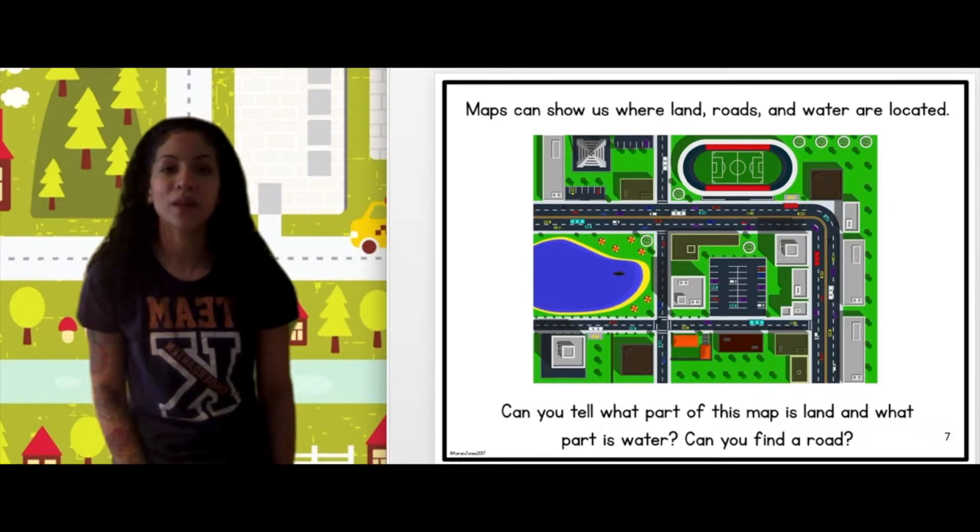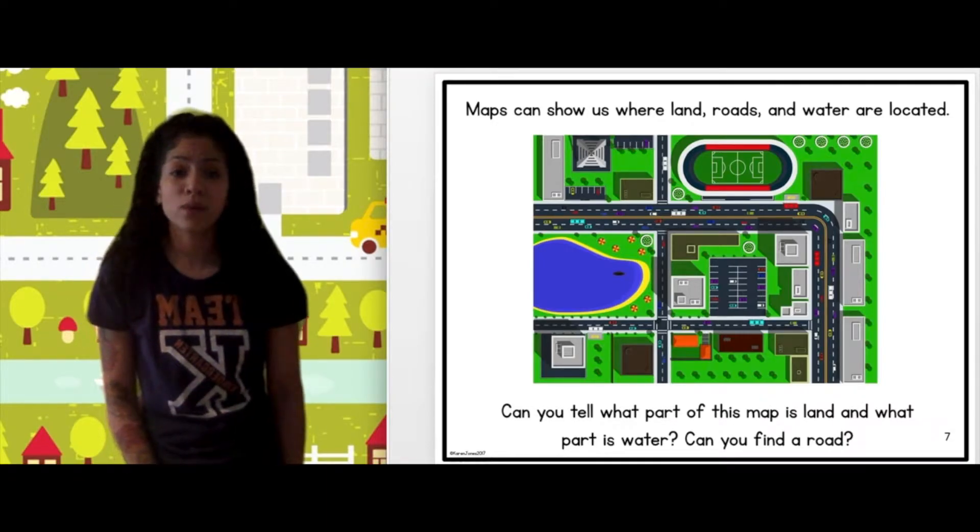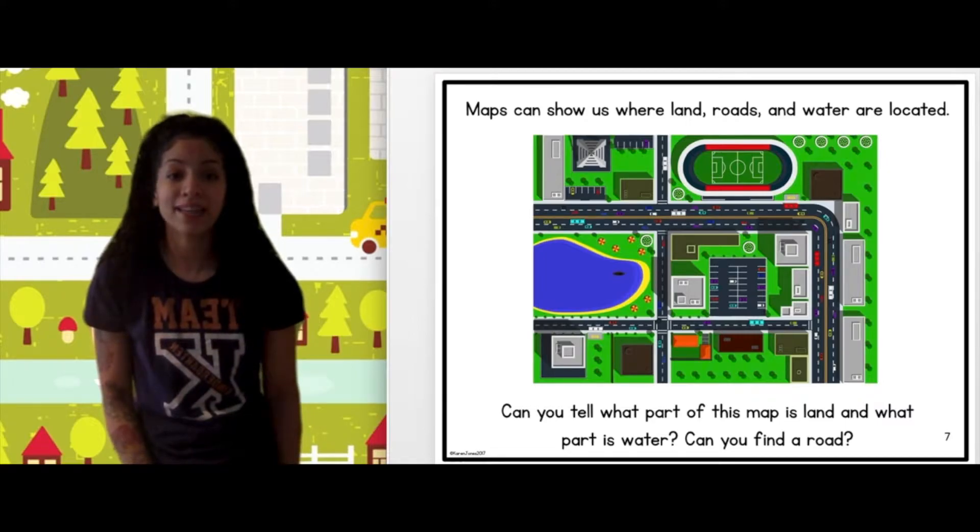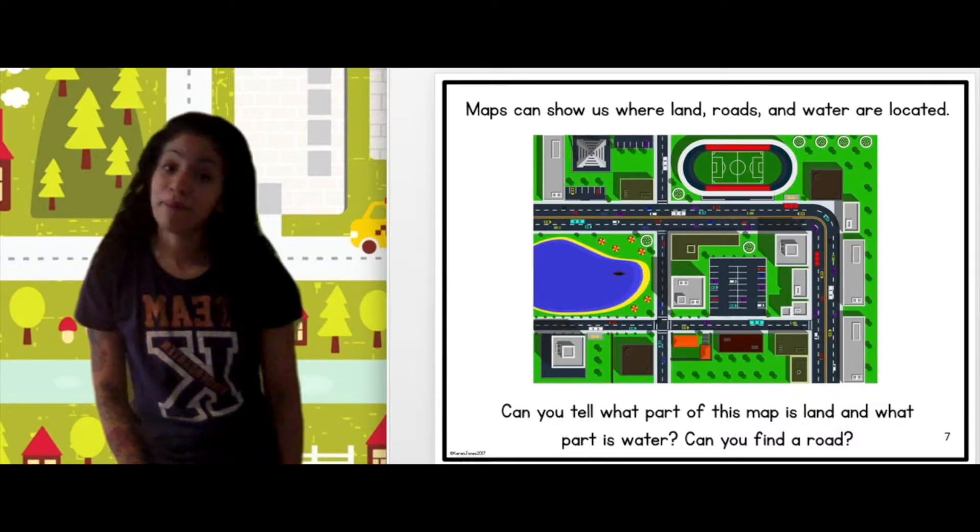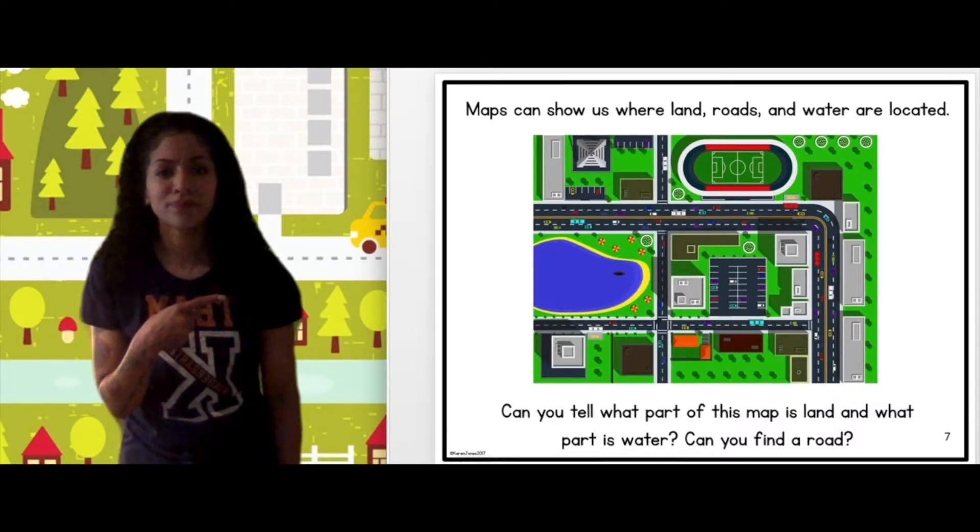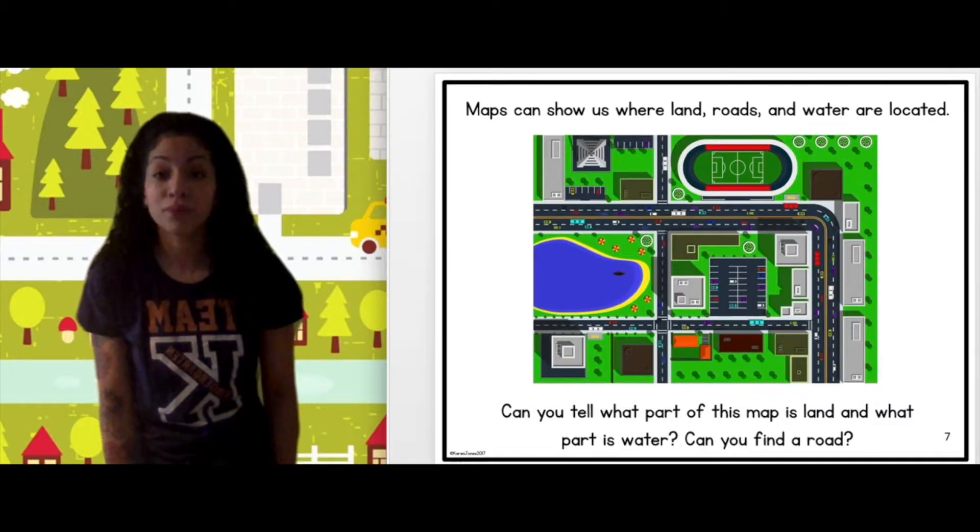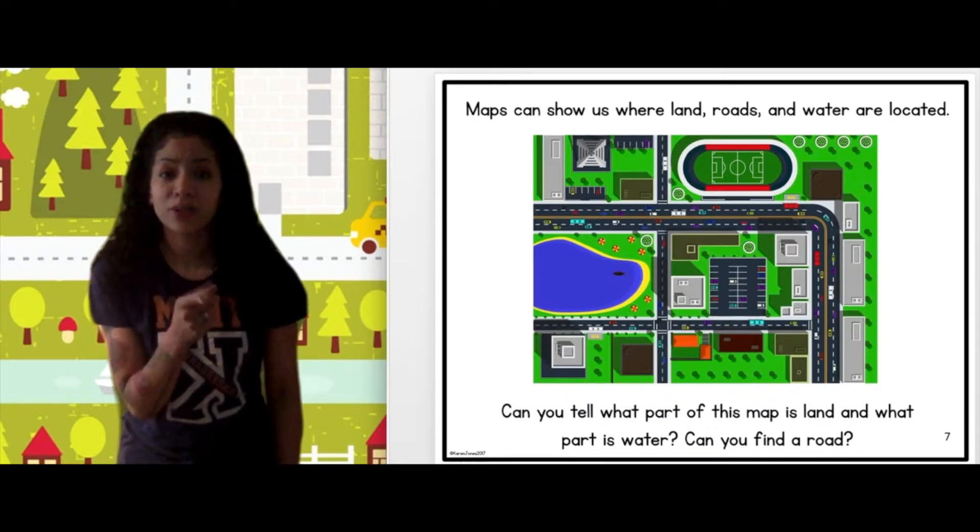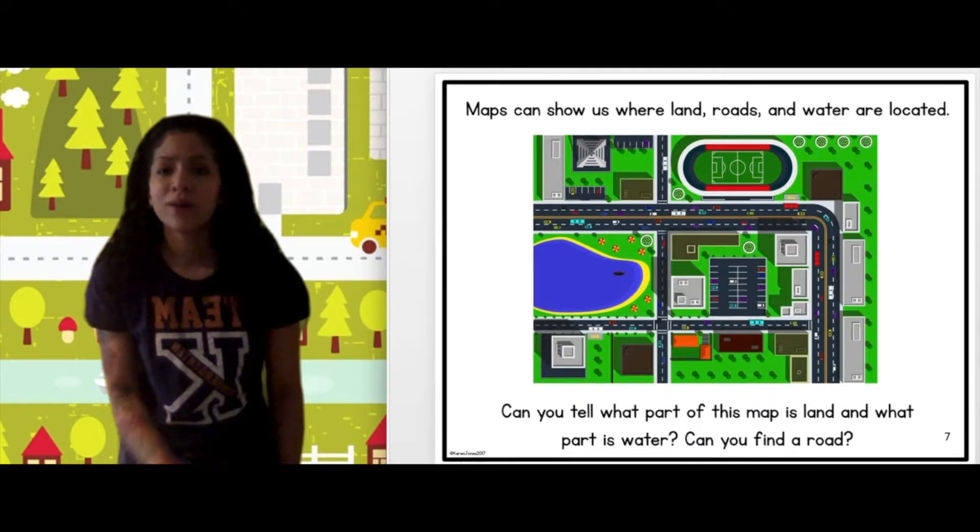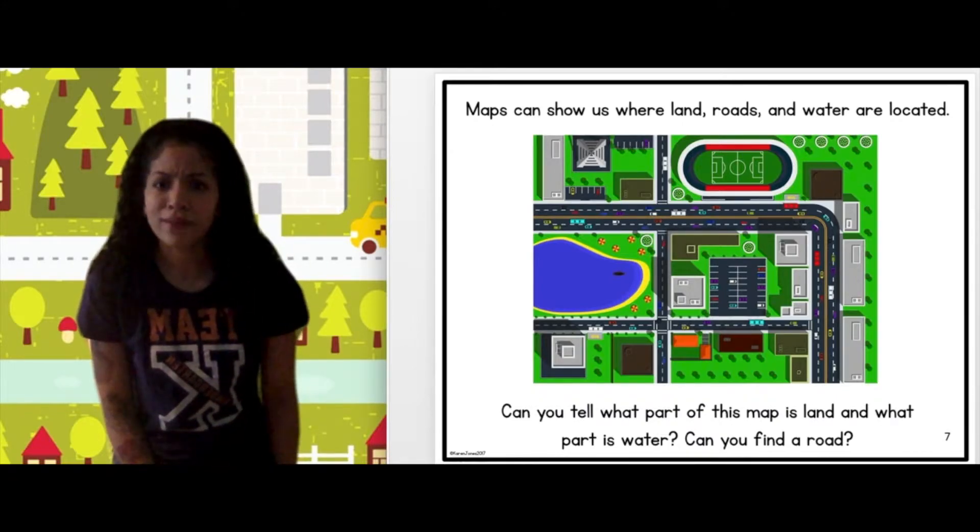Maps can show us where land, roads, and water are located. Can you tell what part of this map is land and what part is water? Can you find a road? Can you look at that map and see right here? Yeah. If you said the water is probably the lake, you see that, the roads. We can tell on this map.